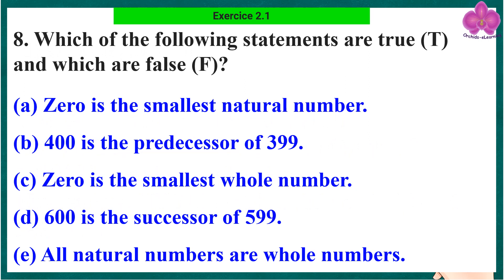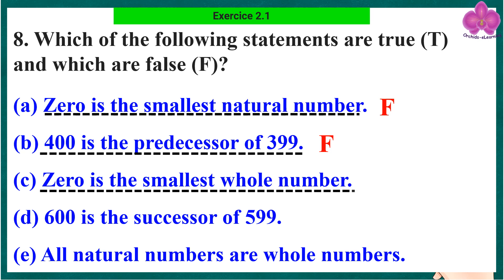Question 8: Which of the following statements are true and which are false? Statement i: 0 is the smallest natural number. False. Statement j: 400 is the predecessor of 399. False.